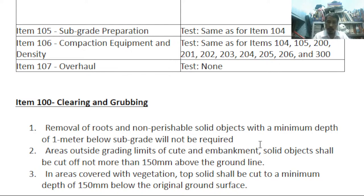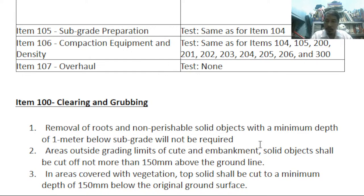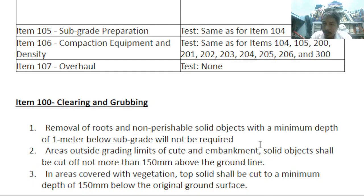If we need to go more than one meter depth, that is not a requirement. You just need to uproot all plants to be clear of grasses and shrubs — no need for deeper than one meter. Number two: areas outside grading limits of cut and embankment — solid objects shall be cut off, not more than 150 mm above the ground line.